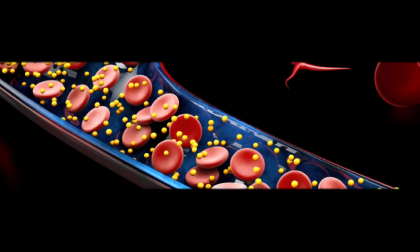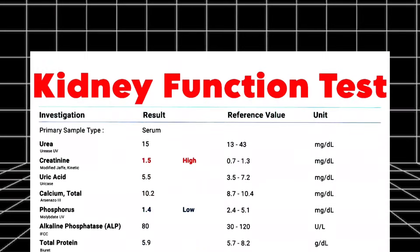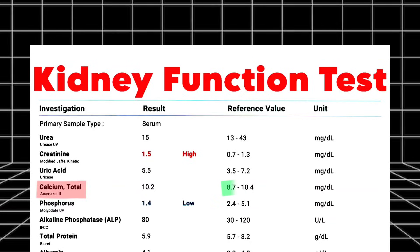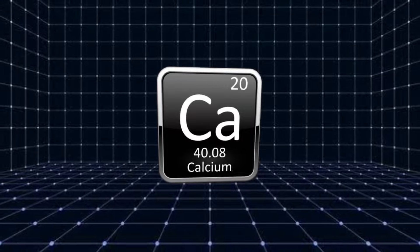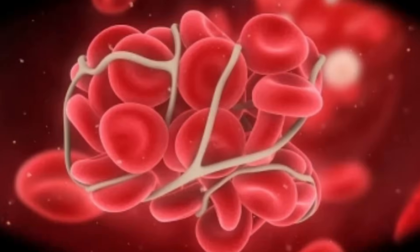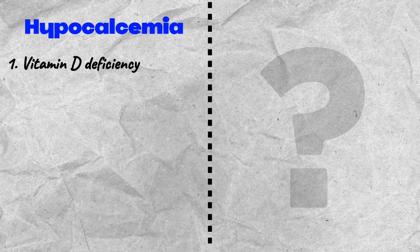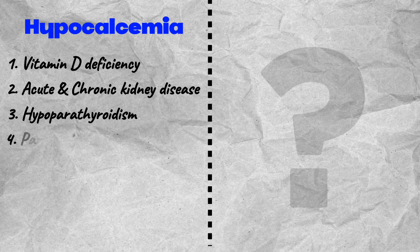Next in our report is calcium total. Total calcium, or serum calcium, is a measurement of the amount of calcium in your blood. The normal range for calcium total in blood is between 8.7 to 10.4 milligrams per deciliter. Calcium is important for bone mineralization, blood clotting, and the function of your nervous system.